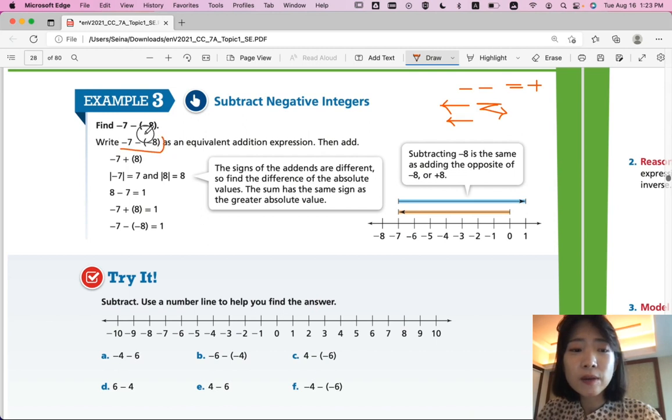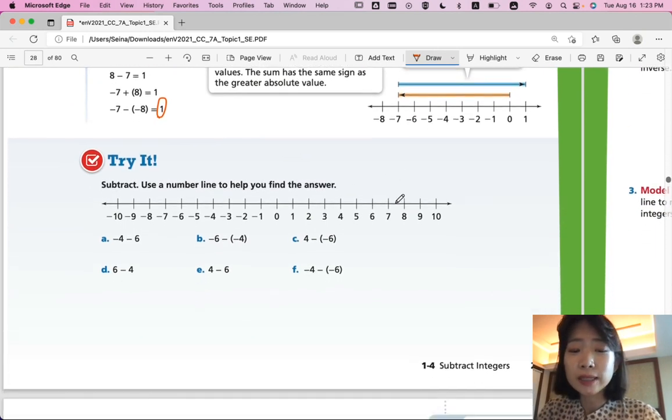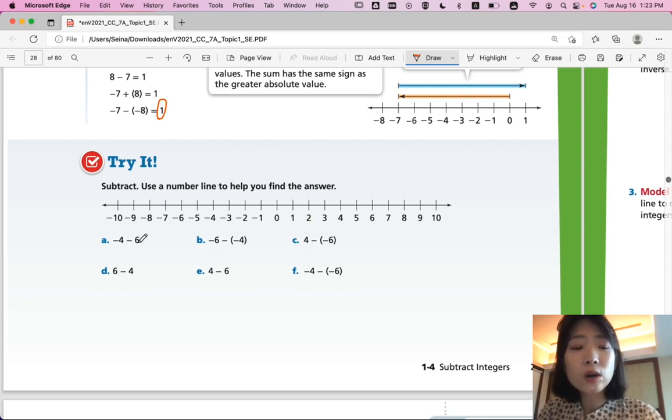So, negative 7 minus negative 8 becomes negative 7 plus 8. That negative, two negatives, are going to become one positive. So, you just have to add negative 7 and 8. You simply have to subtract 7 from 8. You get a positive 1. Alright, so now it's your turn. Try it, number 3. Subtract. Use a number line to help you find an answer. So, see if you can find all these accurately from A to F. And plot them on the number line. Come back when you're ready for an answer.